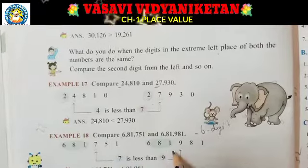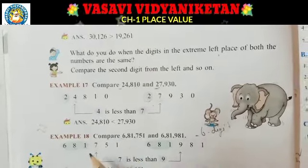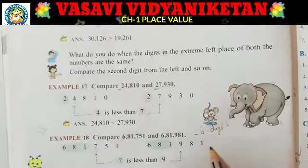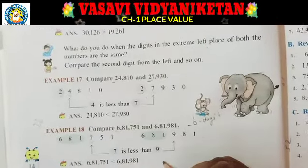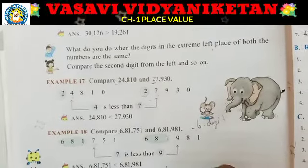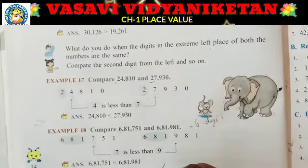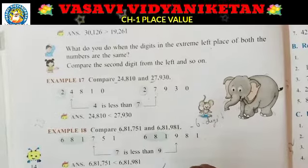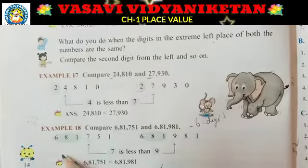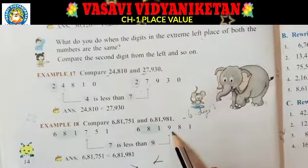So 7 is less than 9. Therefore 6,08,1751 is less than 6,08,1981. We use the greater than or less than symbol. The end point of the symbol points to the smaller number. So 6,081,751 is less than 6,081,981.